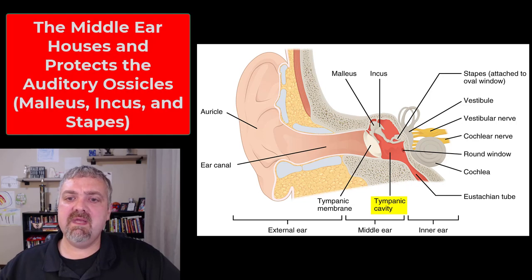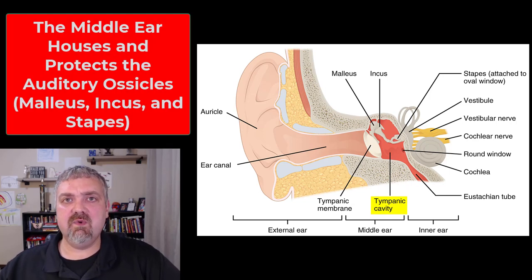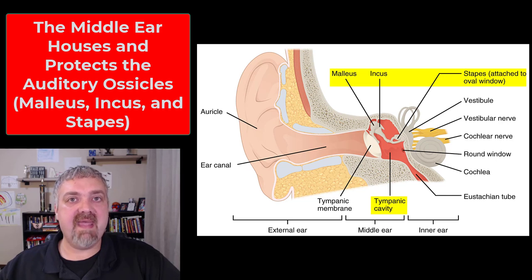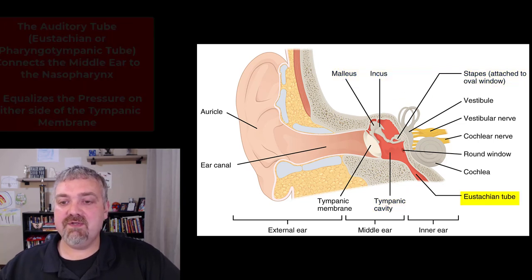Now we have the middle ear. The middle ear is also known as the tympanic cavity. The key things here would be your auditory ossicles — the malleus, incus, and stapes — which people often call the hammer, anvil, and stirrup.